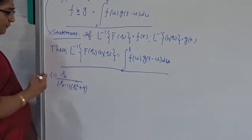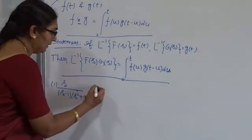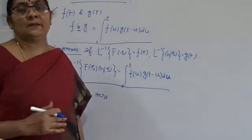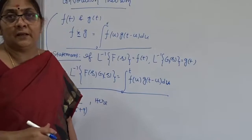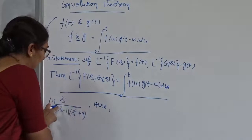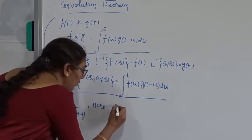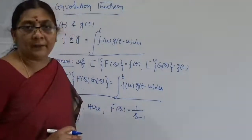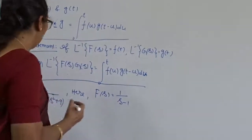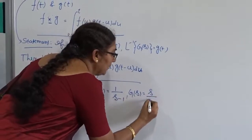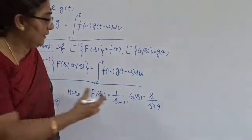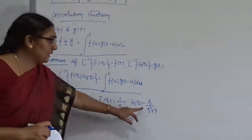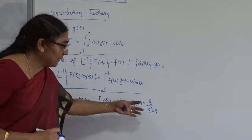For the convolution theorem, the given function must be expressed as a product of 2 functions. So I choose F(s) = 1/(s minus 1), because L inverse of 1/(s minus 1) is e to the power t — we get it immediately. And G(s) = s/(s squared plus 9), because L inverse of s/(s² + 9) is cos 3t. You must choose F(s) and G(s) such that their inverse transforms can be found directly from standard formulas.